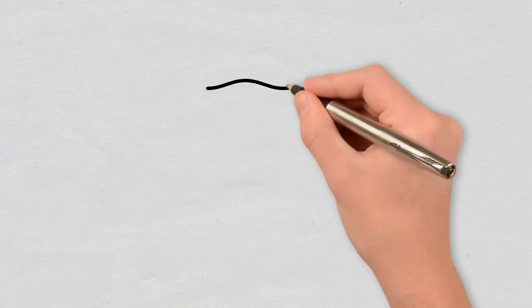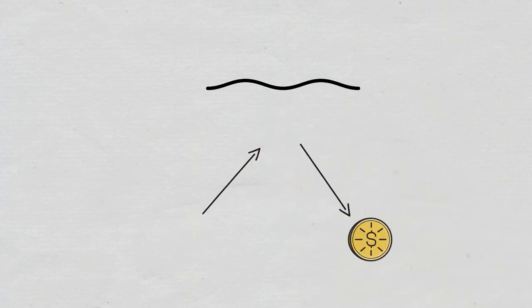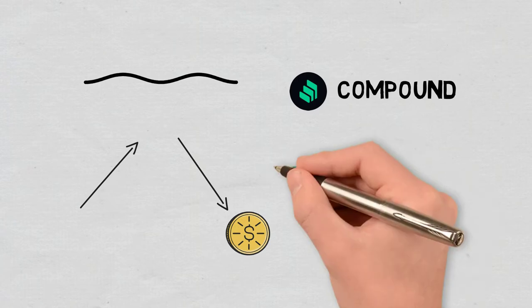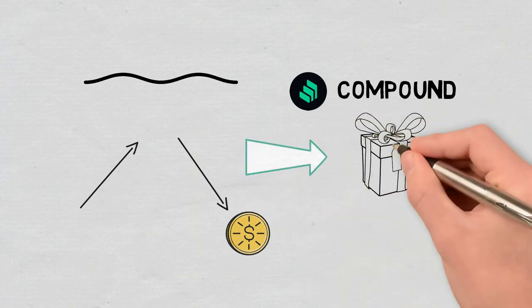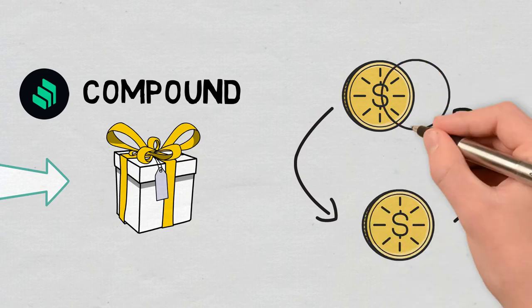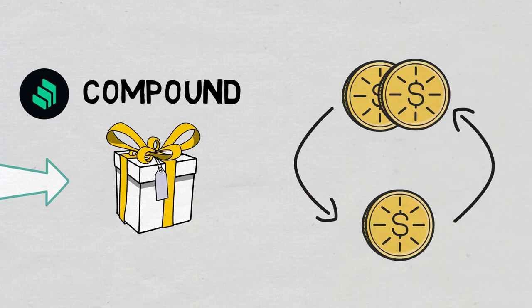Lend and borrow: Some popular DeFi platforms, such as Compound, reward investors with tokens for both supplying capital and borrowing. This way, yield farmers can make a deposit and then borrow against it to earn tokens.